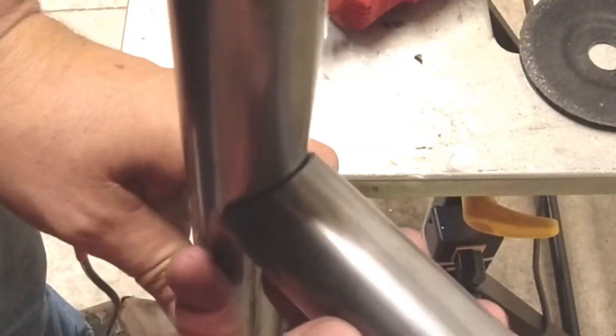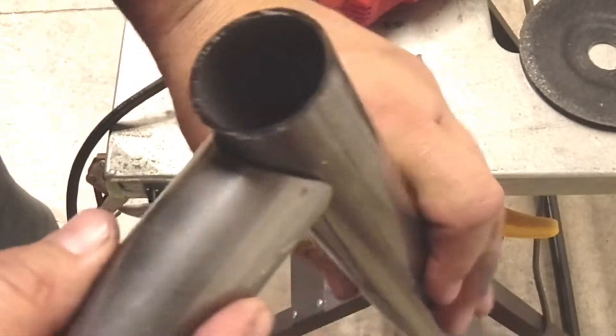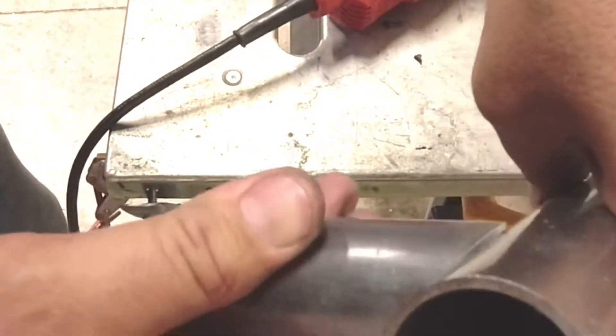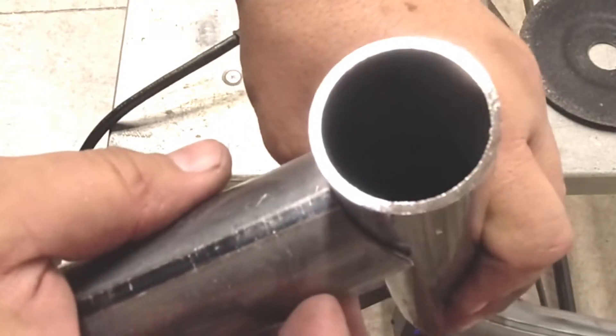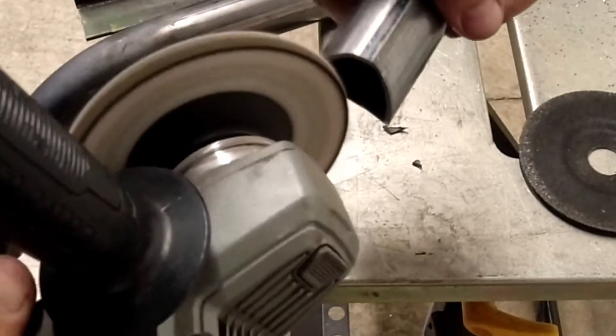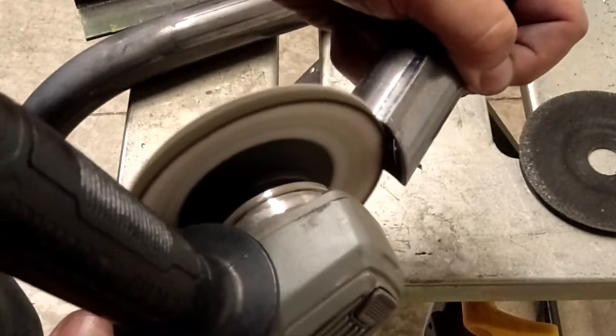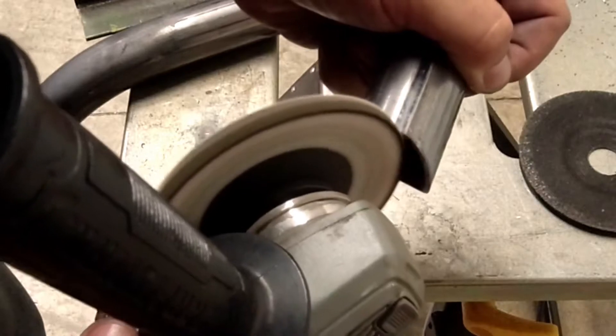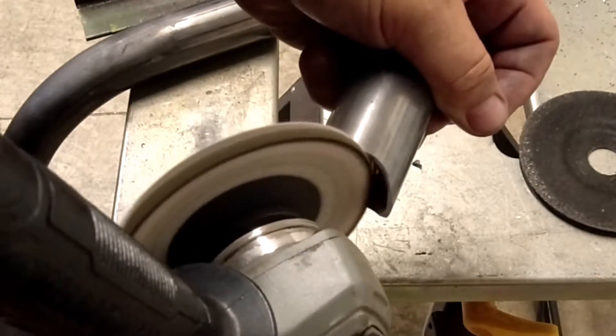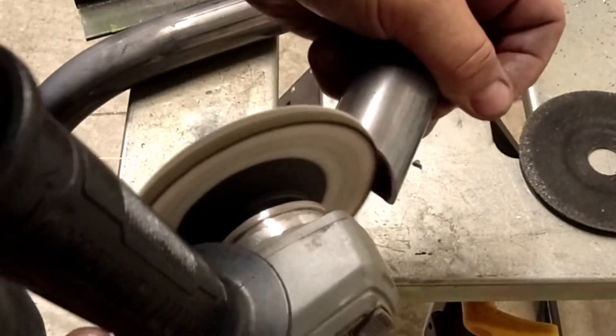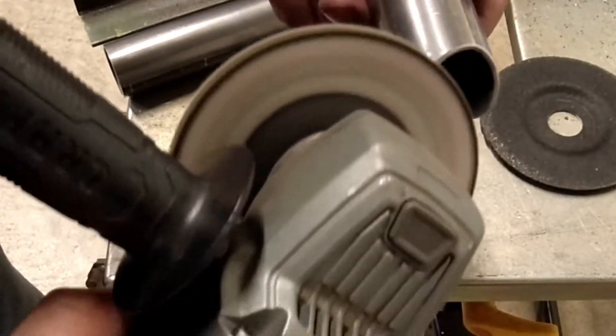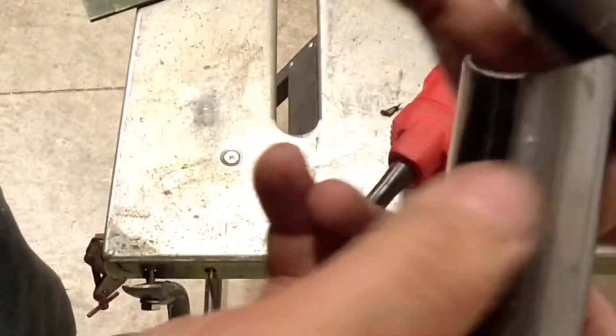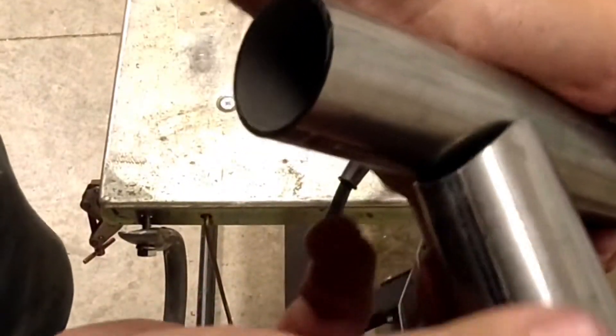We check it just by setting it on the tube and see how we're hitting. Looks like we got to take a little bit out of here, on the very root of it. I'm a little bit off the edges here. There's our tube, and we're ready for welding.